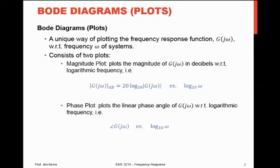It's a very handy way of plotting this stuff. We have two parts: traditionally the magnitude plot on the top, showing the magnitude of the input-output transfer function in decibels with respect to logarithmic frequency. The magnitude of G(jω) in decibels is 20 times the log base 10 of the magnitude of G(jω), versus the log base 10 of omega. So we end up with a plot — decibels on the y-axis, log omega on the x-axis.